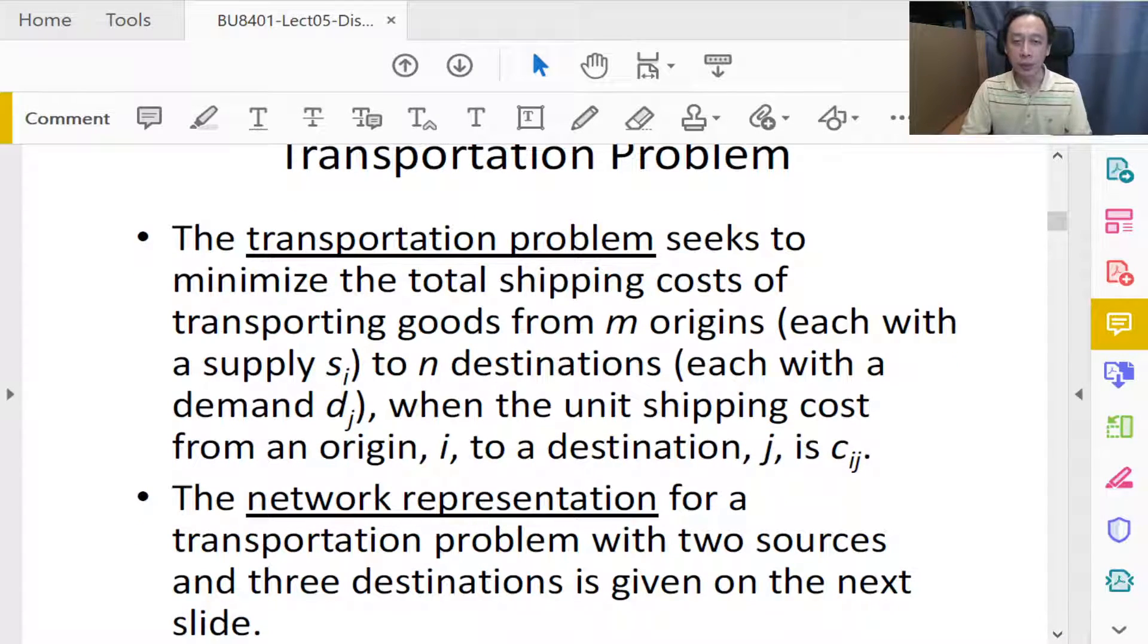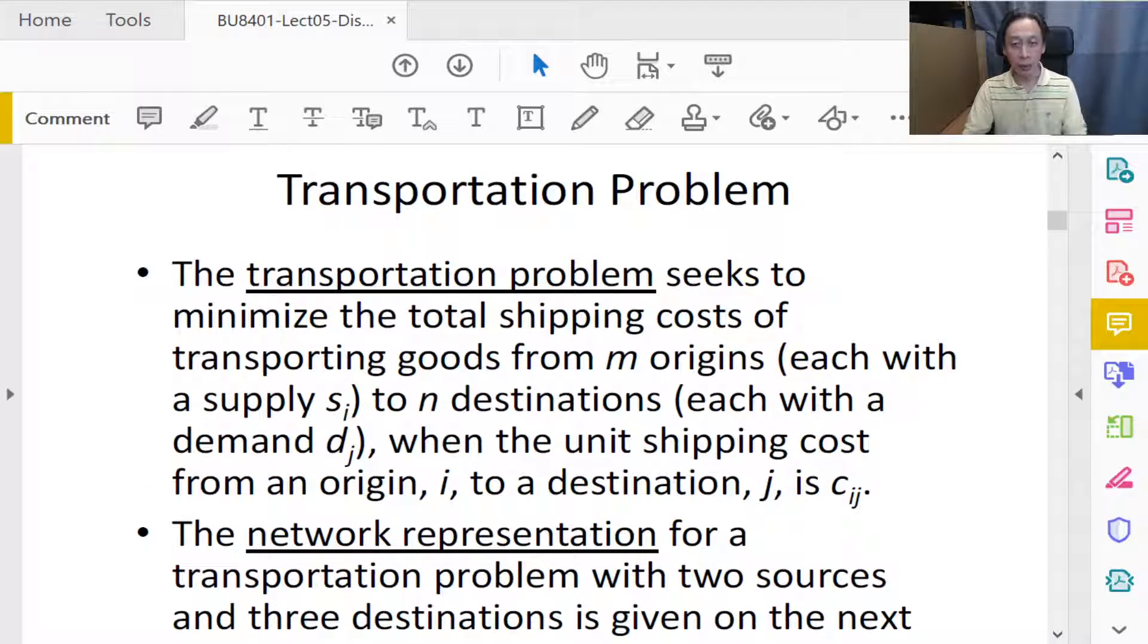This transportation problem is very commonly seen because it is about moving items from one side to another—transportation, right? Moving. And in business we have a lot of logistics and movements. We move goods, we move raw materials, we move people, we move passengers. So definitely a very commonly encountered problem. But we're going to look at the more abstract generalized model rather than a specific kind of objects.